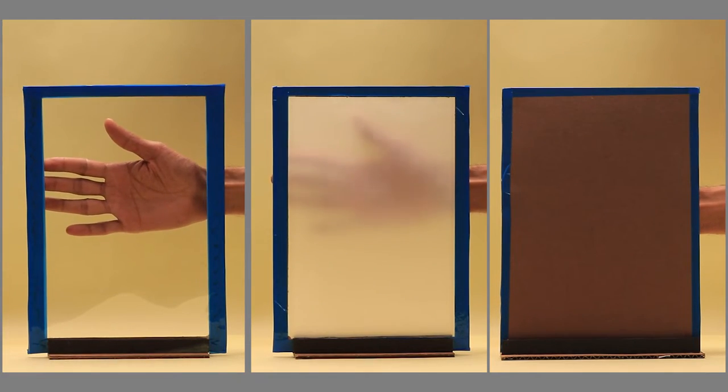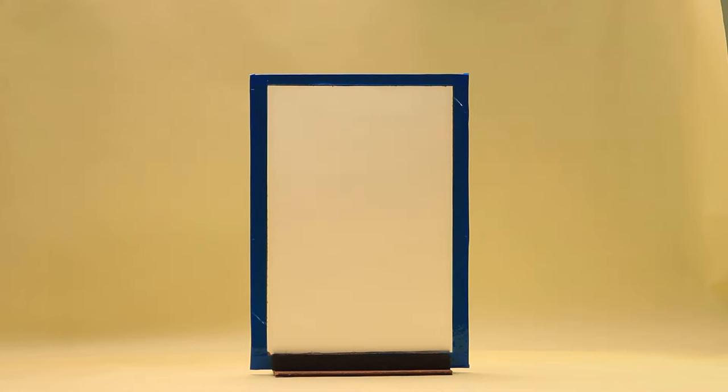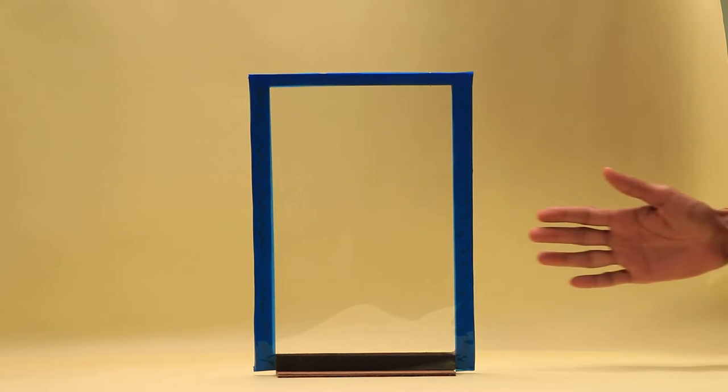The objective of this activity is to identify and differentiate between transparent, opaque, and translucent objects and also to understand the formation of shadows. To explain the types of objects, I have stuck a piece of transparent sheet to one frame, a piece of butter paper to the second frame, and a piece of card sheet to the third frame. The activity is very simple.